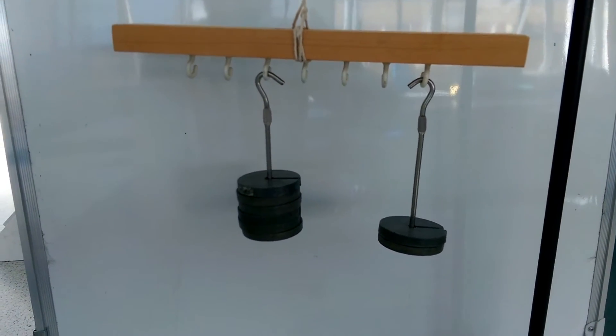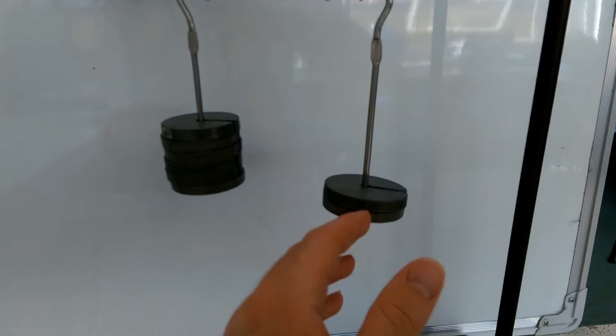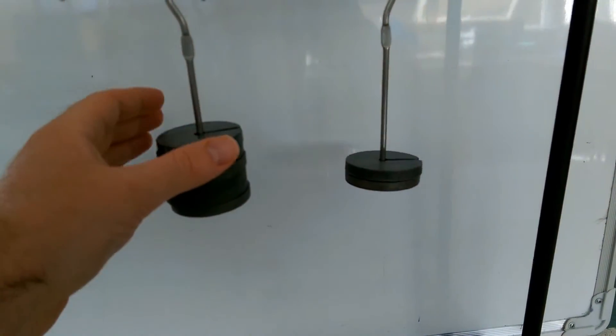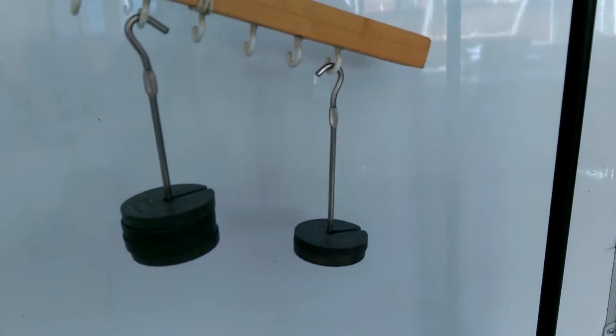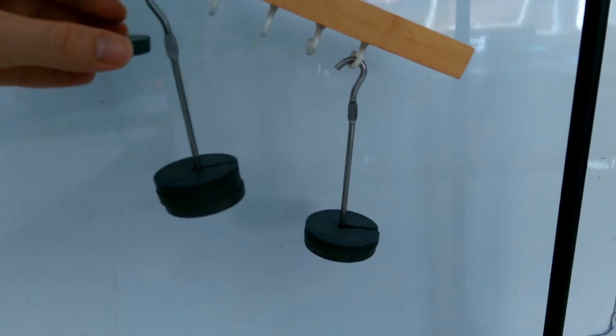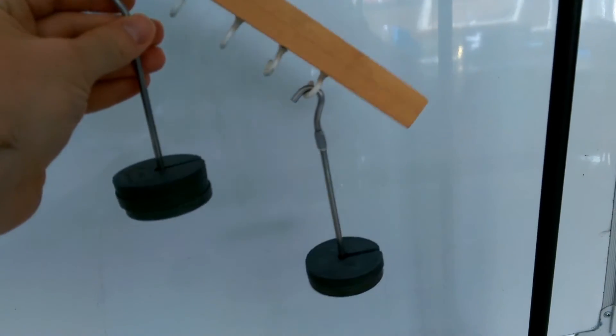But there are other ways to make it balance as well. The moment on this side is six, so if I have three on the second rung, that also will be a situation where the moments are balanced.